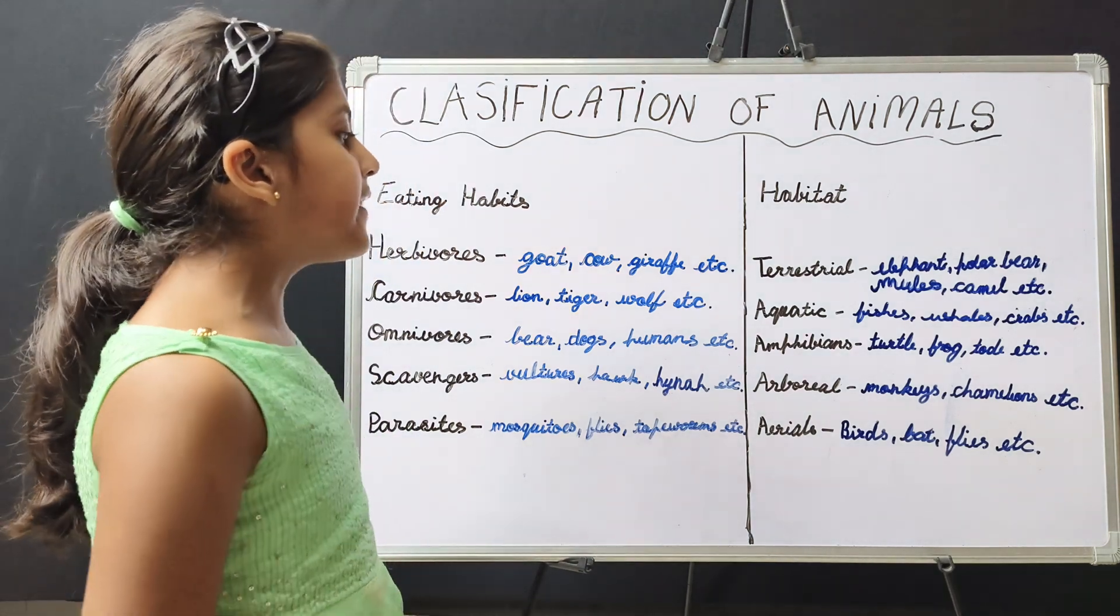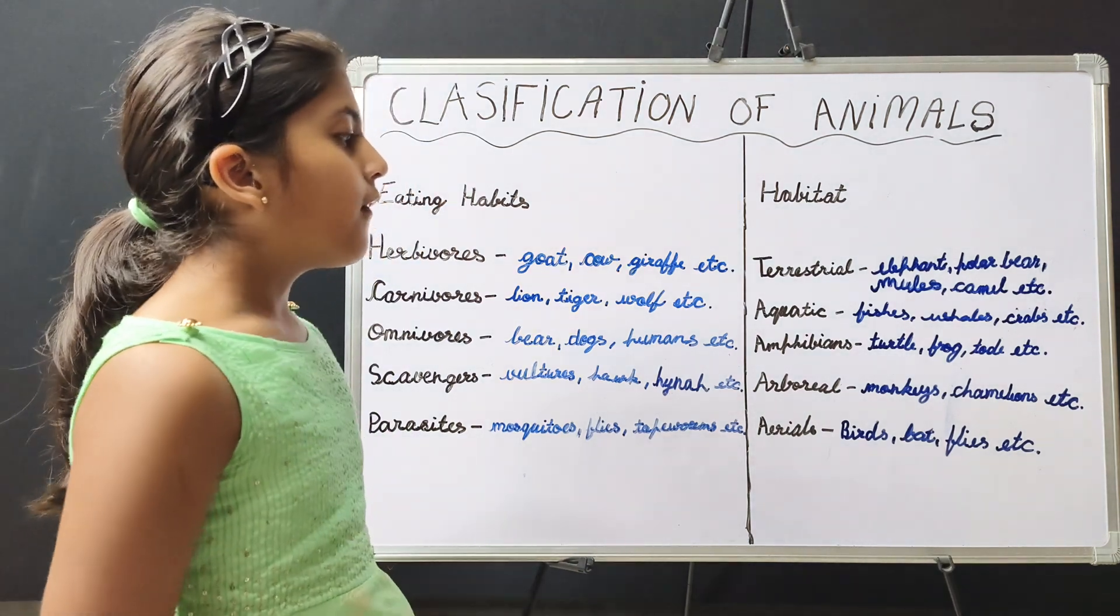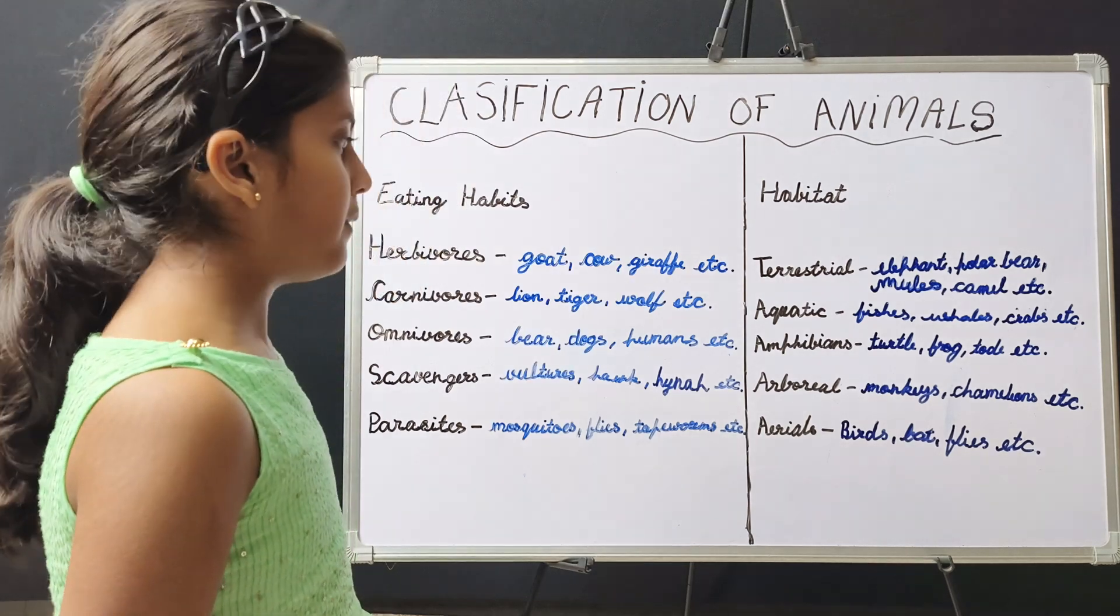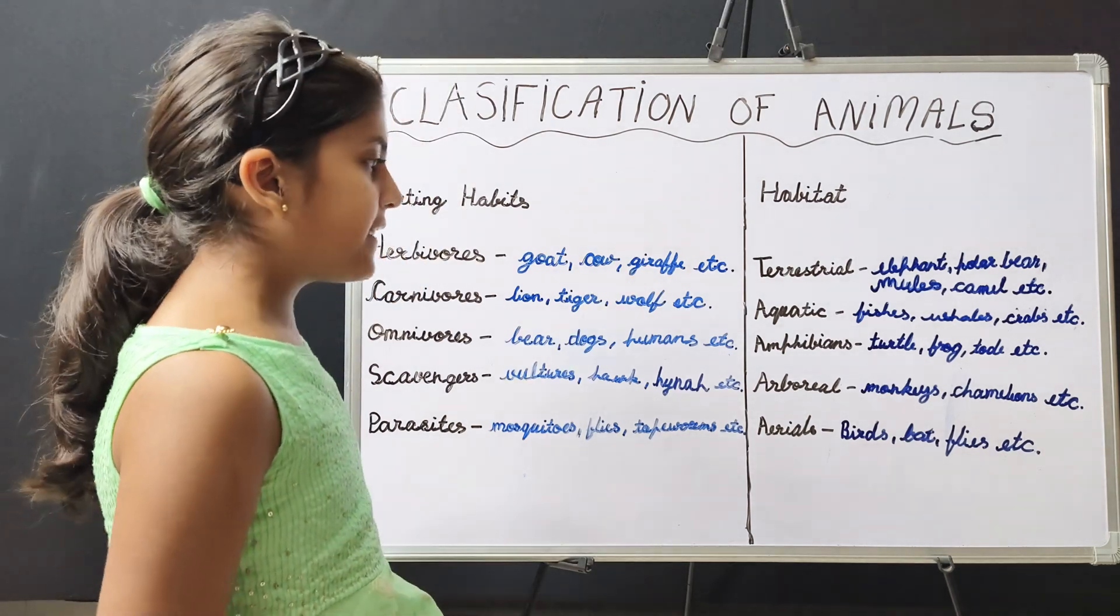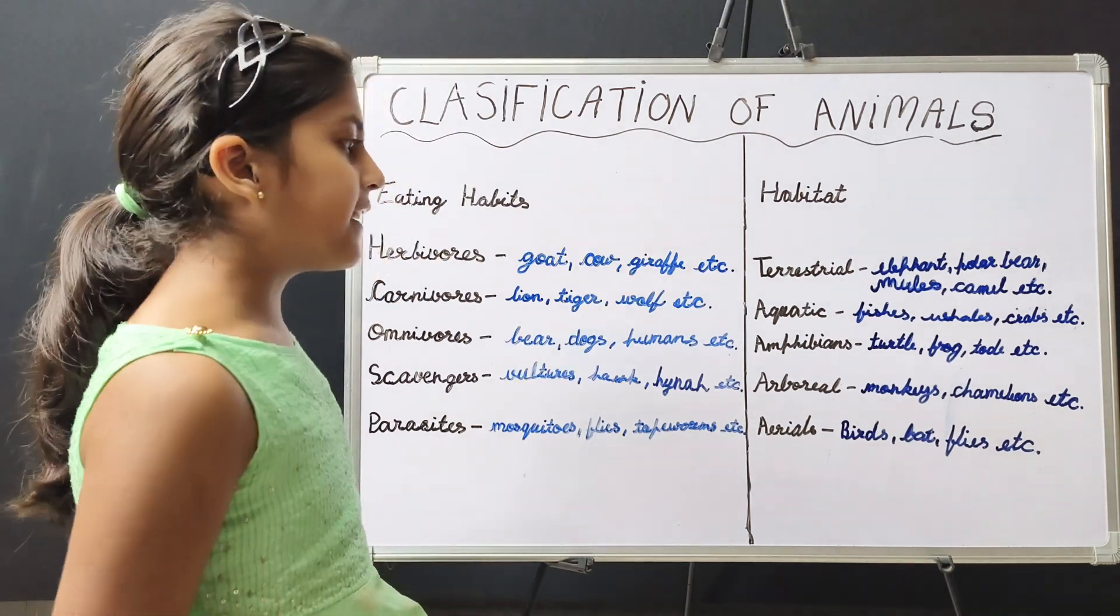Aerial animals are those animals which can fly. For example, birds, bats, flies, etc.